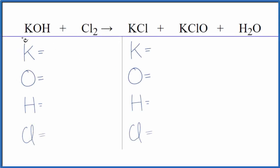In this video we'll balance the equation for KOH plus Cl2. This is potassium hydroxide plus chlorine gas. So let's count the atoms up and then balance the equation.